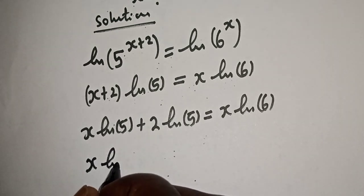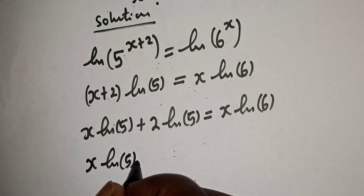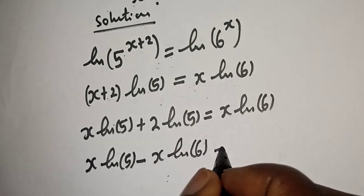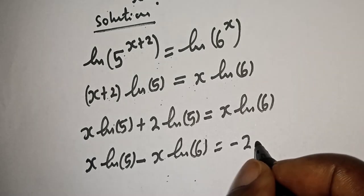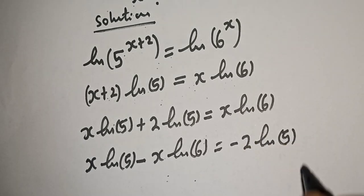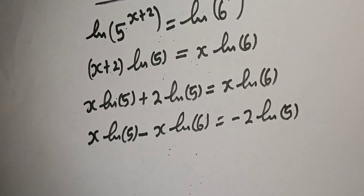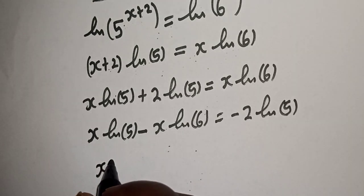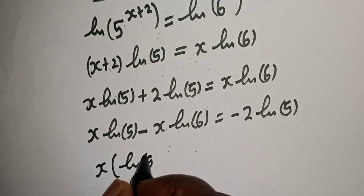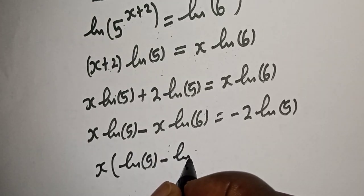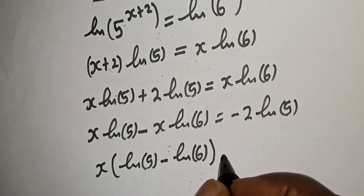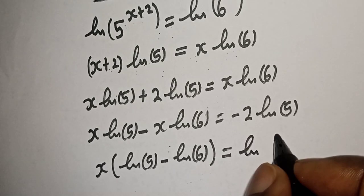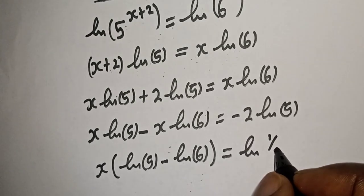Rearranging: s natural log of 5 minus s natural log of 6 is equal to minus 2 natural log of 5. The right hand side can be written as natural log of 1 over 25.